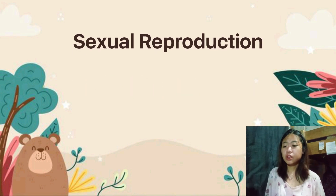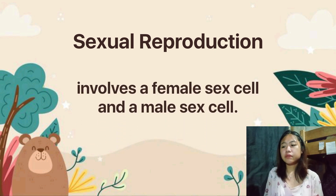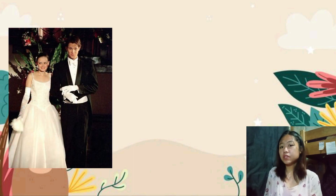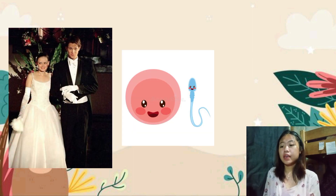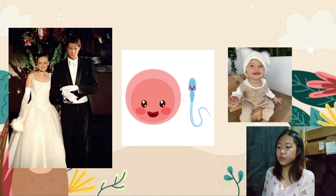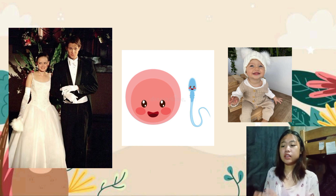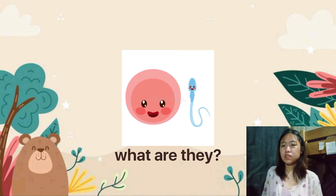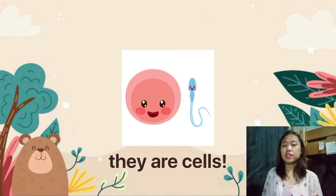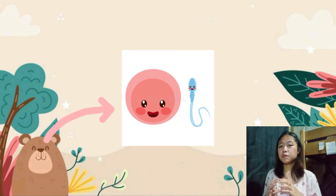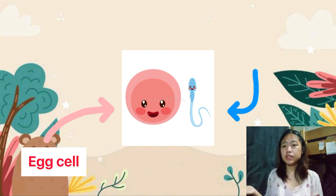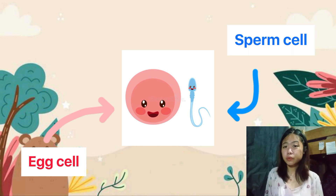What is sexual reproduction? Sexual reproduction involves a female sex cell and a male sex cell. Let's look at this example. We have here a picture of a man and a woman, two cells, and then a baby. The round-shaped cell is what we call the egg cell, and the one shaped like a snake or tadpole is what we call the sperm cell.